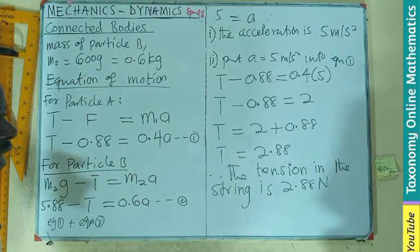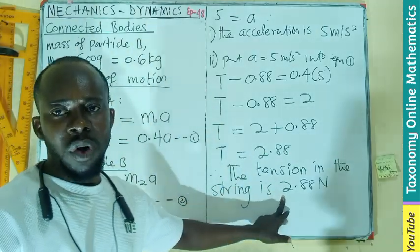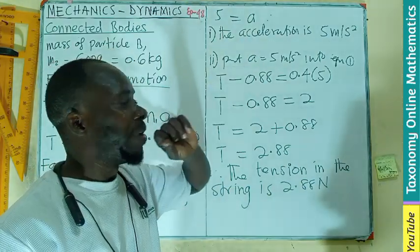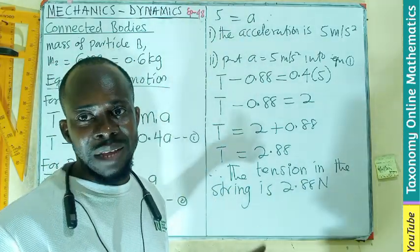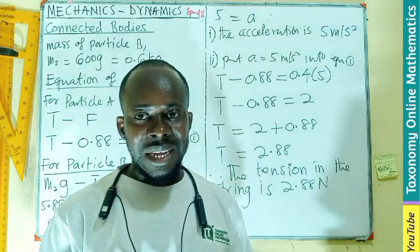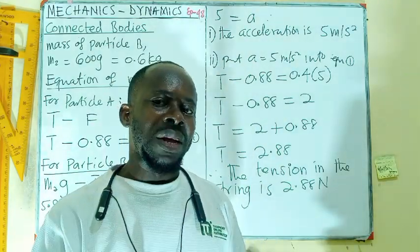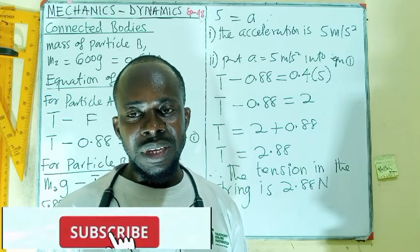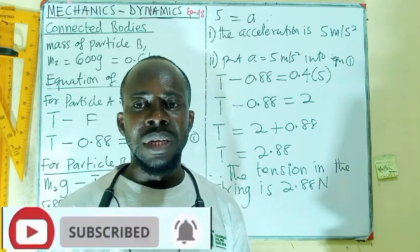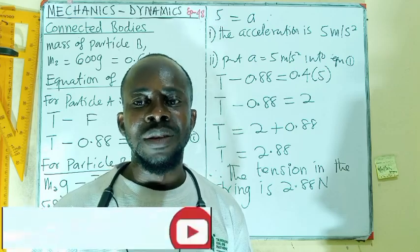Therefore, the tension in the string is going to be 2.88 newtons, and the acceleration is 5 meters per second squared. I guess you are able to get the understanding of the concept which we have laid the foundation in episode 46, 47, and this episode. Thanks for watching, like, share, comment, and subscribe.